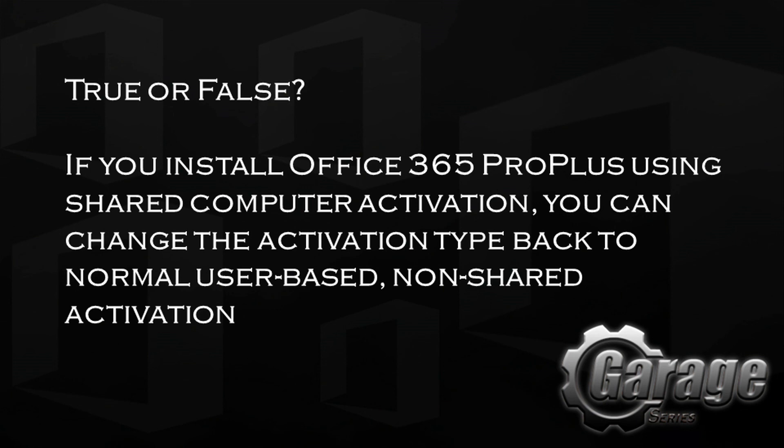To recap, we've covered shared computer activation with standard images, where to use it, and whether it works with Citrix — all with great answers that really open it up to a lot of people. And the trivia answer: true — if you install Office 365 Pro Plus using shared computer activation, you can change the activation type back to normal user-based activation, and it only takes one registry key. Shared computer activation is available now, so if you have Office 365 Pro Plus, go out and try it. Follow us on Twitter and check us out every Wednesday on the Garage Series. Thanks for watching!